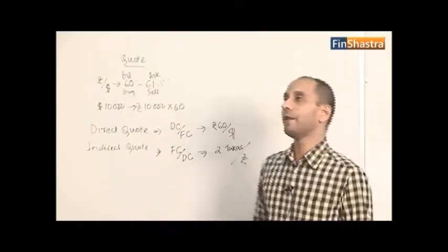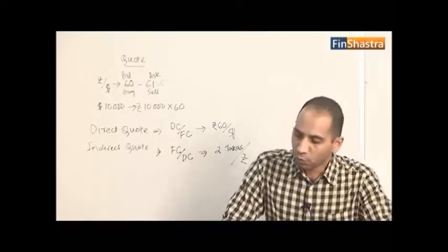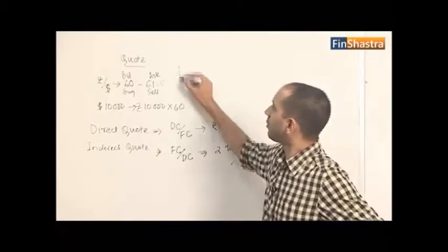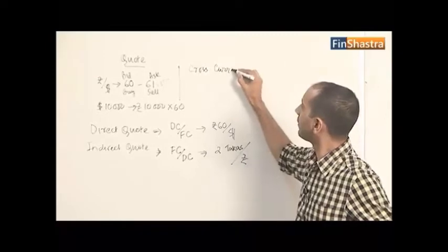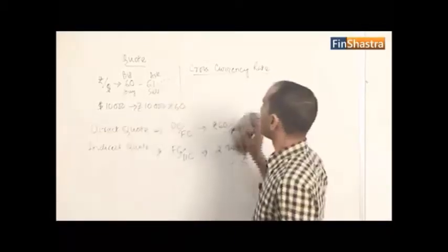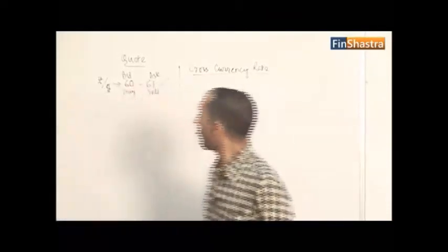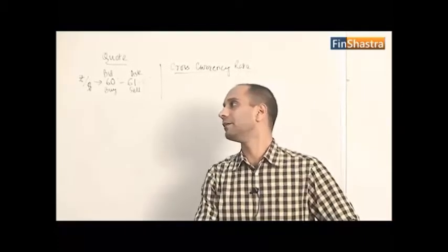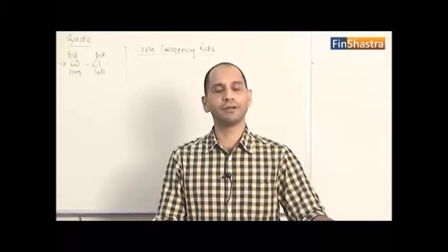Now that you've begun to understand the two-way quote, there could be currency pairs for which the exchange rate doesn't directly exist. This is what's known as the cross currency rate. For example, the Argentine peso is not a very liquid or highly traded currency against the Indian rupee.